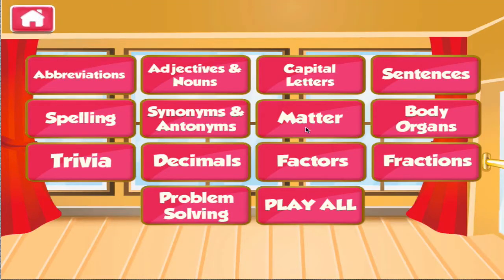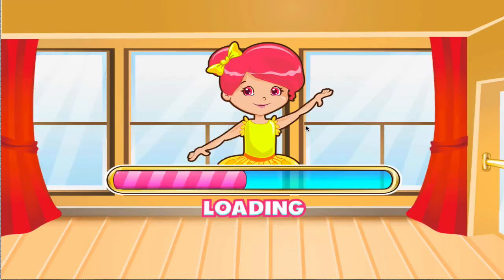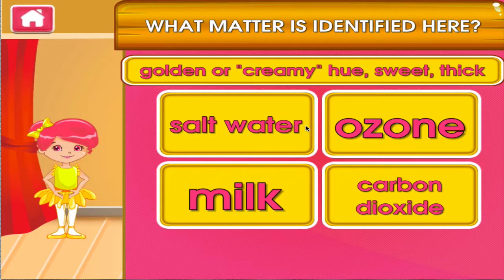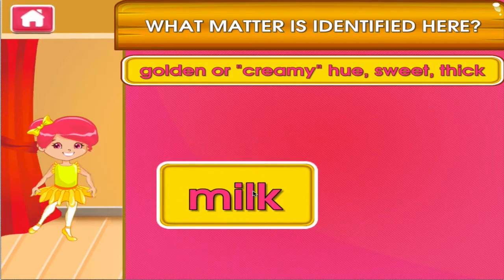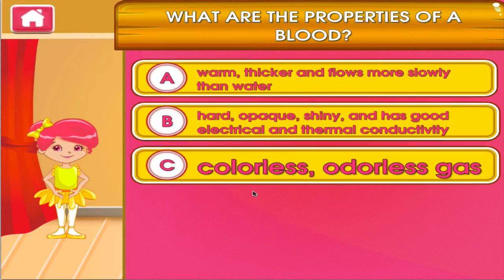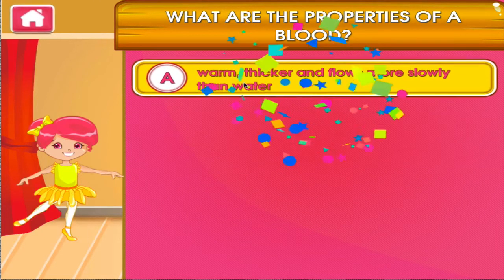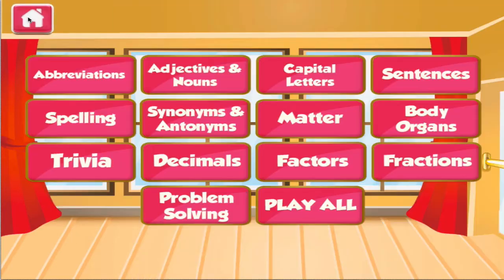Choose the activity you want to play. Matter. Tap the correct answer. Nope! I don't think it's that one. Woo-hoo! Tap the correct answer. See? You can do this!